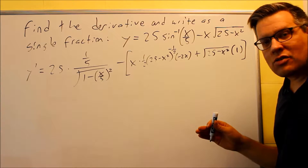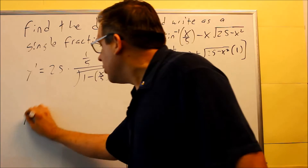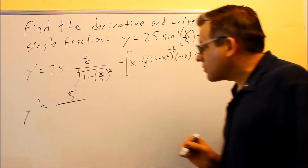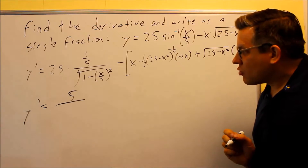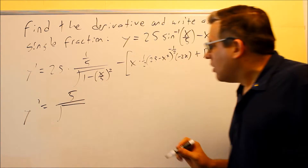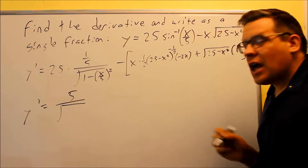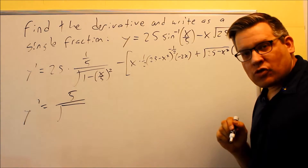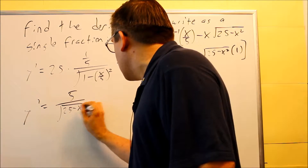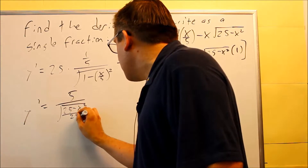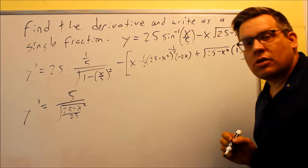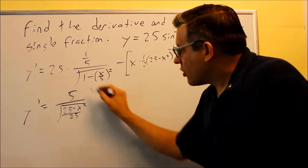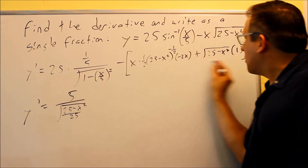It does simplify down pretty nicely to a single fraction. First, we'll do 25 times 1/5 and get a 5 on top. On the bottom, I'm going to get common denominators with what's inside the square root. I'll square x/5 to get x²/25, then multiply the 1 by 25/25 to get a common denominator. When I put all that together, I get (25 − x²)/25 all inside the square root. We can do more simplifying with this later, so let's now simplify the part inside the brackets.